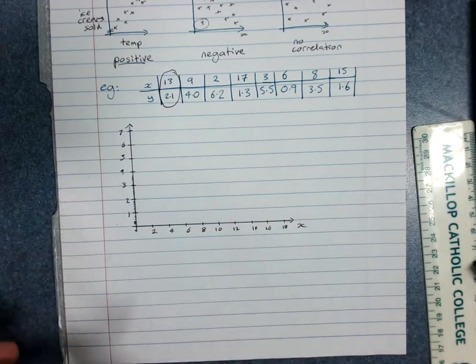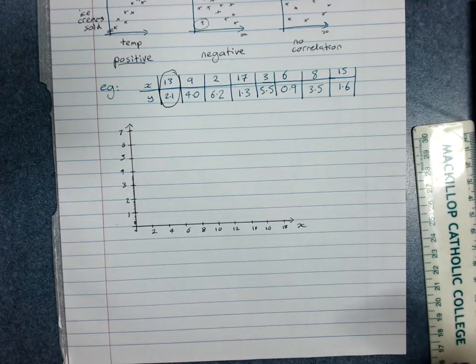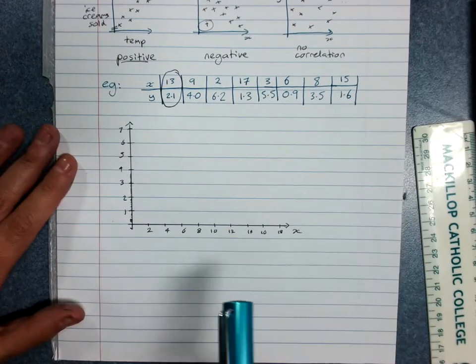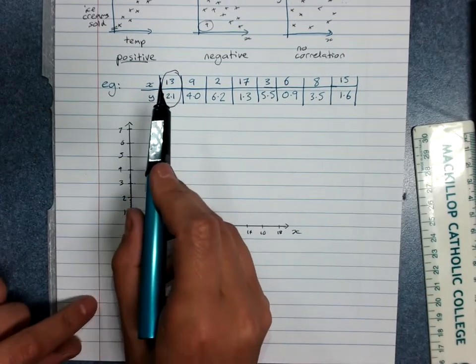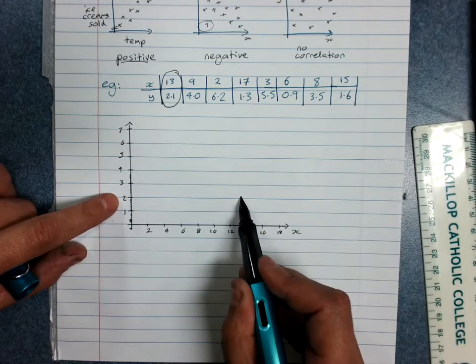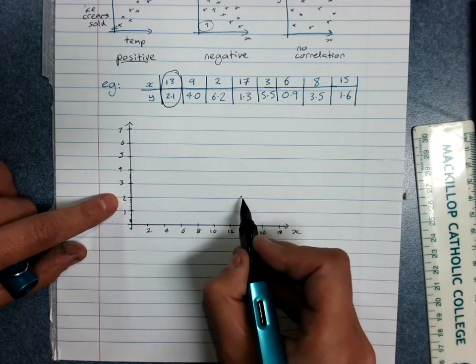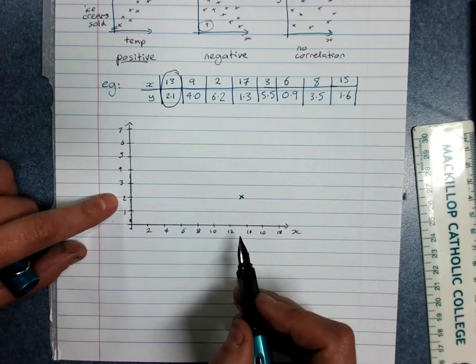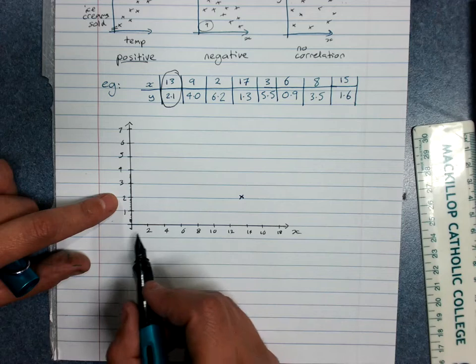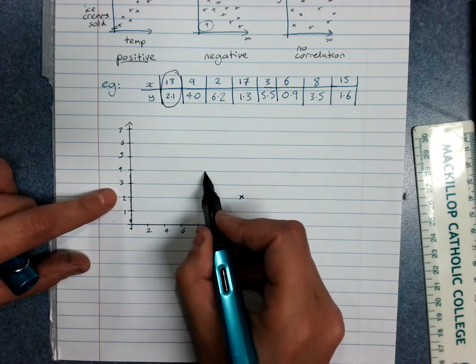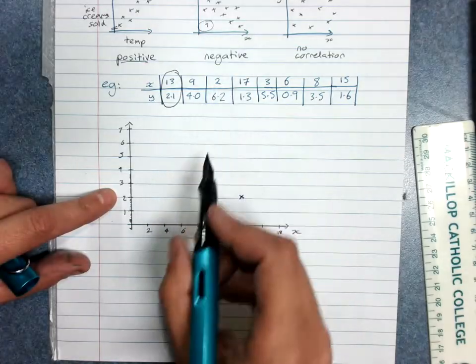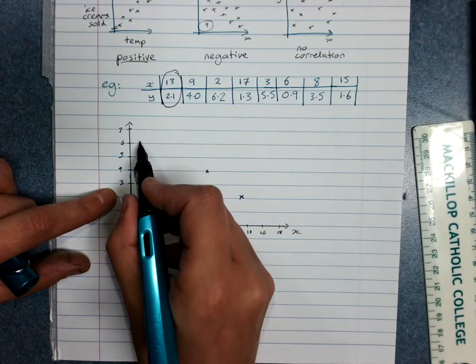Then, as accurately as you can, and again this is easier with grid paper, you plot these coordinates. The x and y coordinates. So here, x was 13, y is 2.1. A dot or a cross is fine. x was 9, y was 4. If you do find yourself on a line, make sure you use it. 2 and 6.2.